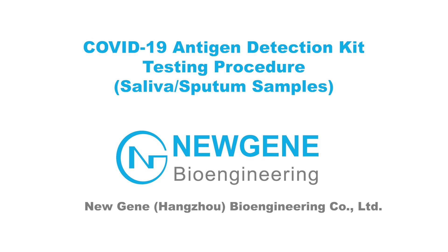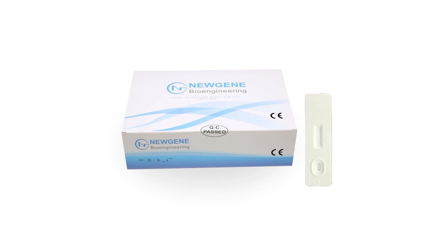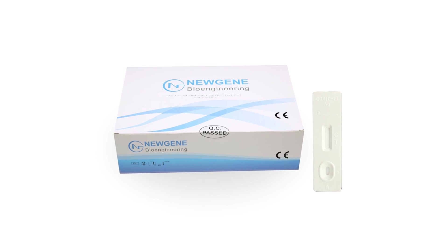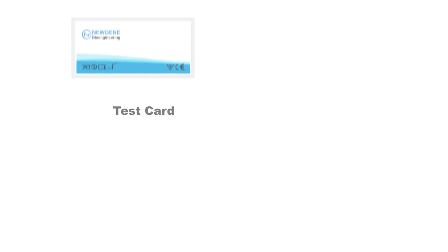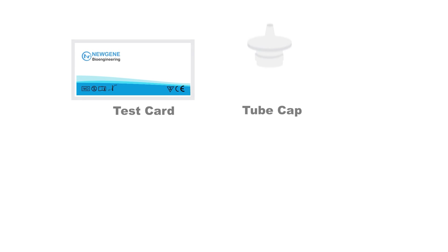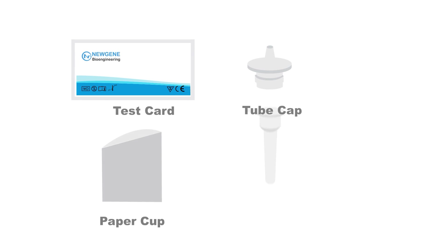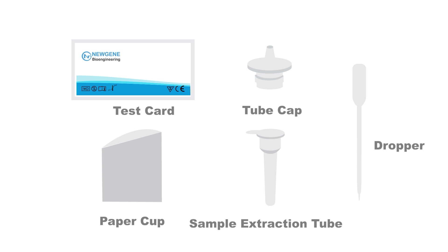COVID-19 Antigen Detection Kit Testing Procedure — Saliva and/or Sputum Samples. Product Composition: Test Card, Tube Cap, Paper Cup, Sample Extraction Tube, Dropper.